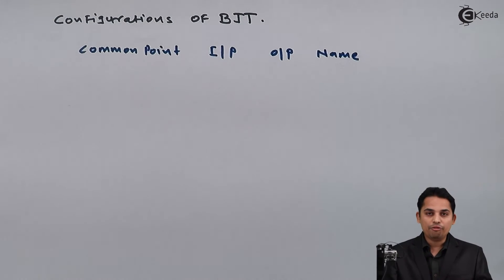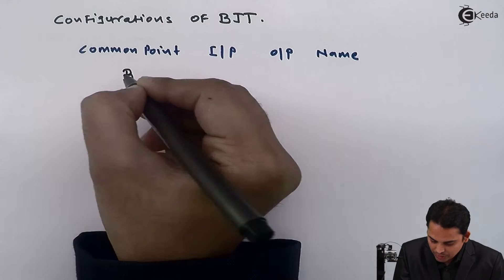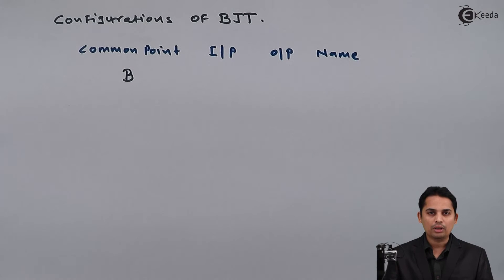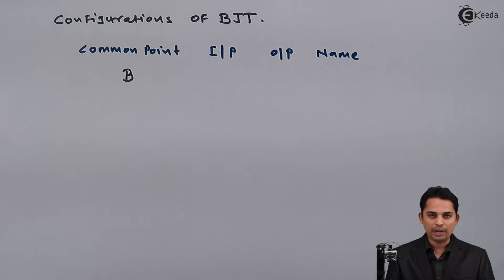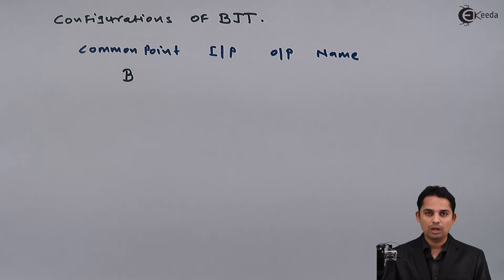Suppose we take base as the common point. With base as the common point, two terminals remain: collector and emitter. One will be the input terminal and the other the output terminal. To decide which is input and which is output, we need to look at the fundamental characteristics of base, emitter, and collector.